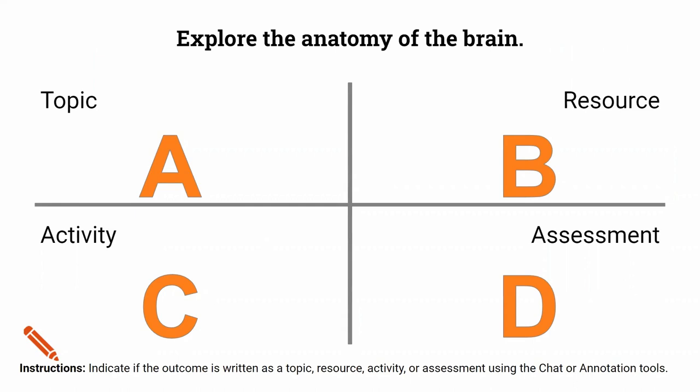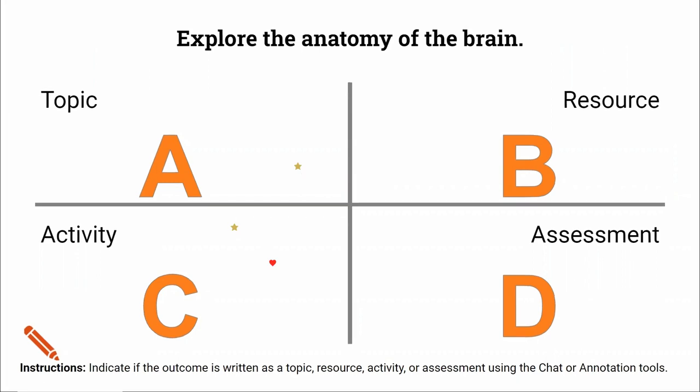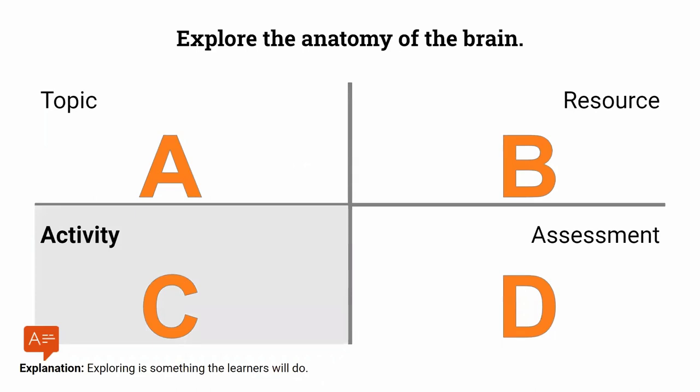Next up: 'Explore the anatomy of the brain.' Activities and topics coming up in the chat. I classified this as an activity — exploring is really something that the students are going to do. Is there a clear way to measure whether students have explored the anatomy of the brain? Think about what students will be able to do after they've explored the anatomy. Is it that they will be able to label specific parts of the brain, or categorize where certain functions happen within the brain?